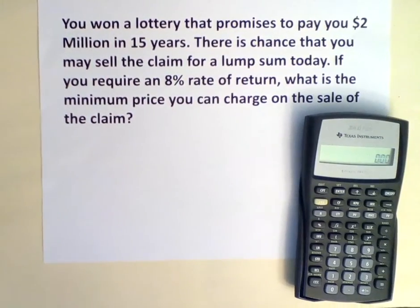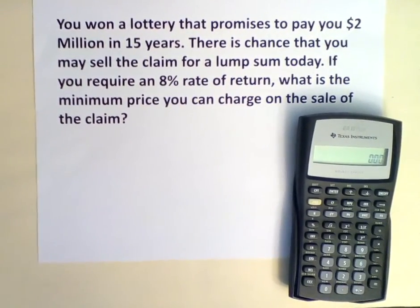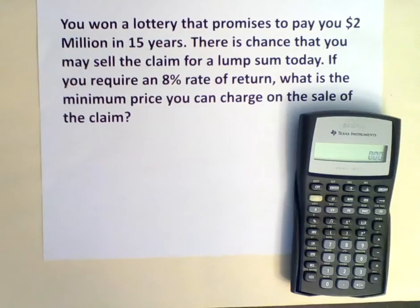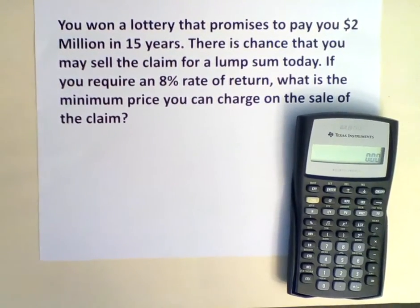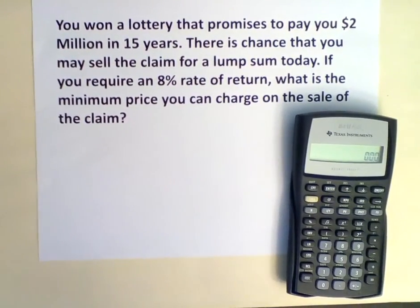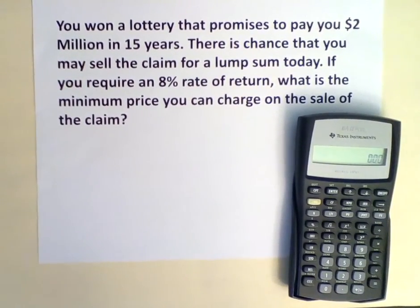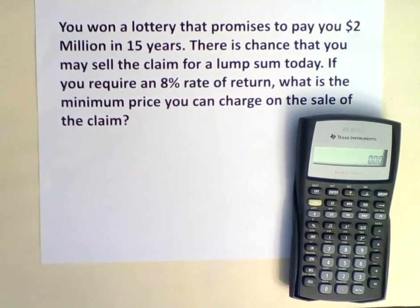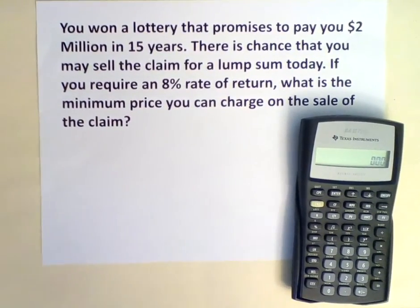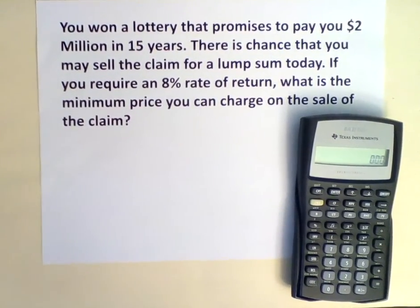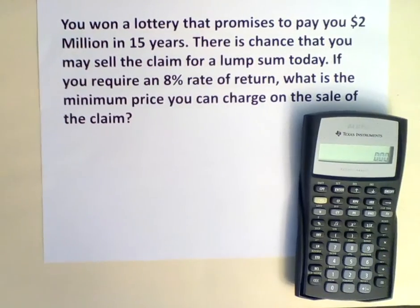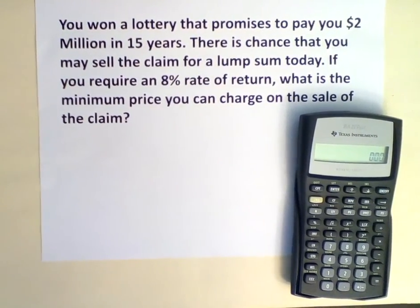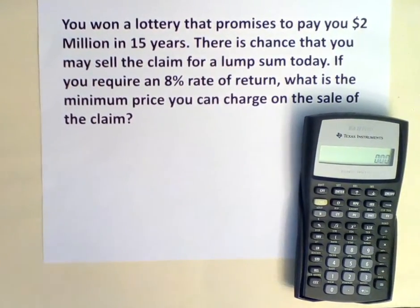We need to determine the price that we receive today if we were to sell the lottery claim and make an 8% rate of return. The price that will be determined will be the present value. Before we calculate the present value on the financial calculator, we need to identify our inputs.